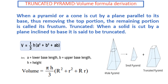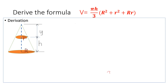We will derive the formula for the truncated volume: V equals pi h over 3, times the quantity (R squared plus r squared plus R times r). Here is the derivation. We have this pyramidal cone. At the bottom is big R, the top base is small r, this height is y, and the height between r and big R is h.